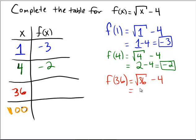The square root of 36 is 6, because 6 times 6 equals 36. And when we subtract 4 from this, we get the value of 2. So the output, in this case, is 2.